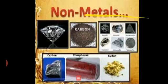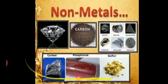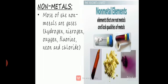Non-metals are elements that are not metals and lack the qualities of metals. Most non-metals are gaseous — for example, nitrogen, hydrogen, oxygen, fluorine, neon, and chlorine. Only one non-metal is present in liquid form, that is bromine, with symbol Br.